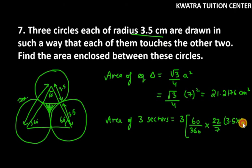So 3.5 × 3.5. Let's solve this to find the answer. 60 and 360 give us 6.